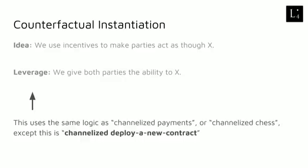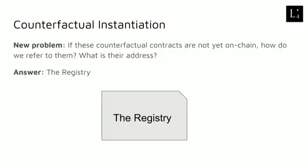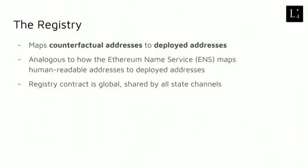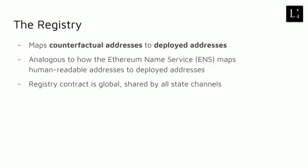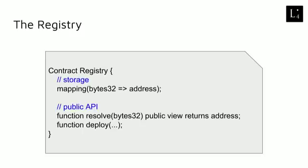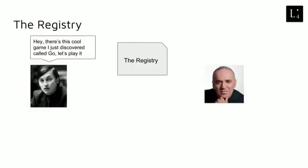For counterfactual instantiation, we have a unique problem: before Ethereum contracts are actually deployed on-chain, we don't know for certain what their address is. But we need a way to refer to these contracts before they are deployed on-chain. The way we solve this problem is by a contract called the registry. The registry maps what we call counterfactual addresses to deployed addresses. This is analogous to how the Ethereum Name Service maps human-readable addresses to deployed addresses. The registry contract is global, which means that we only need one deployment of it to the Ethereum mainnet, and all the state channels can share this one copy.